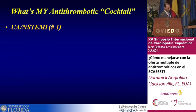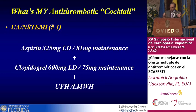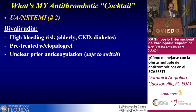So what's my antithrombotic cocktail? Our starting point is simple: everybody gets a load of aspirin continuing with low-dose maintenance, a 600 milligram load of clopidogrel continuing with 75 milligram maintenance, and all patients get some form of indirect thrombin inhibitor. The next question is when do I use bivalirudin? I use it in all my high-risk patients for bleeding — elderly, CKD, and diabetes — particularly if they're pre-treated with clopidogrel, and if there's unclear prior anticoagulation because it's safe to switch.